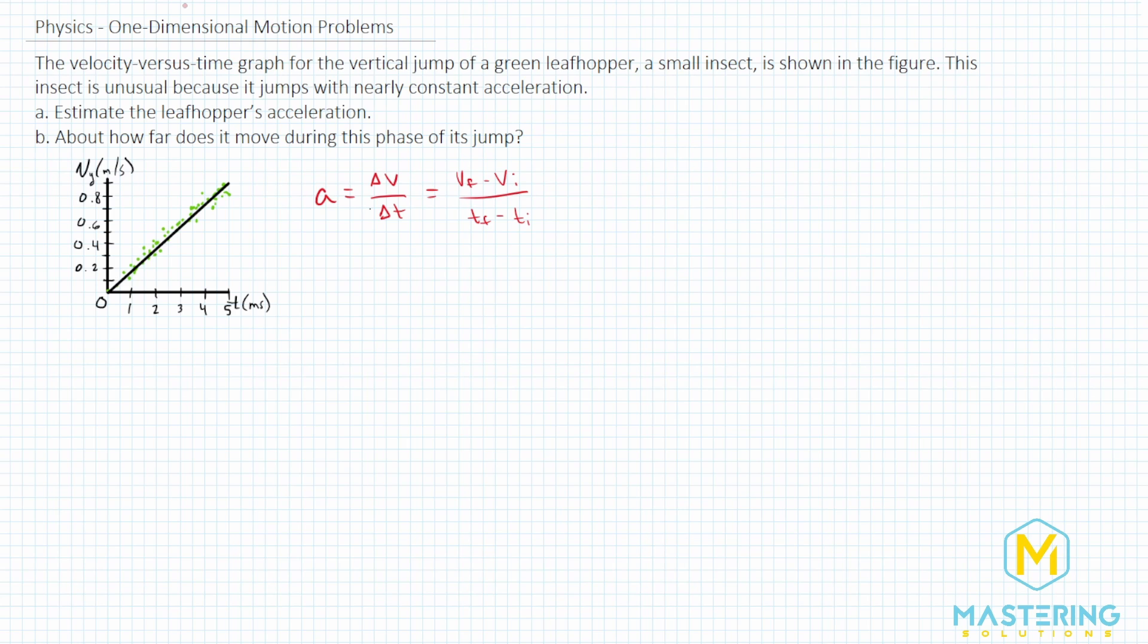So the velocity final, if we look, it's basically at 0.9 meters per second. So we have 0.9 meters per second, and we'll subtract the initial, which is zero. And now that will be divided by the time, which is 5 milliseconds, or writing that differently, 5 times 10 to the negative 3 seconds so it's in standard units.